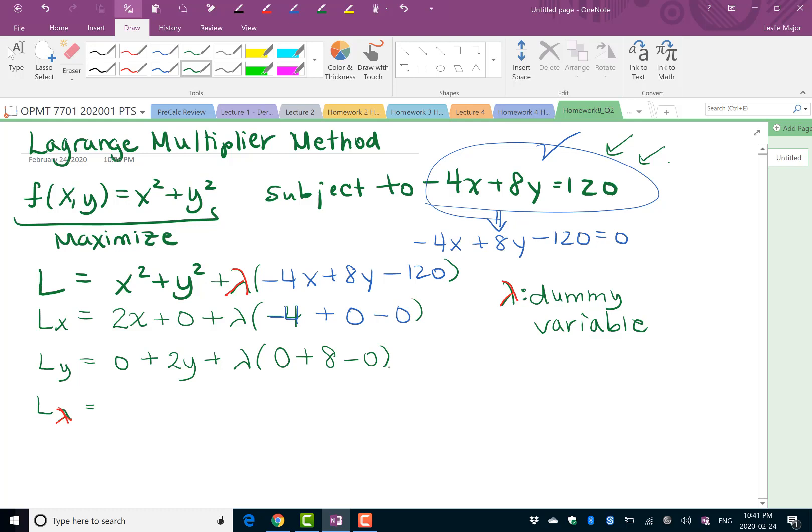And then finally L lambda. We have a lambda out front of this whole expression. Derivative of lambda with respect to lambda is just 1. Everything inside the bracket comes along for the ride, so it stays attached. The x squared and y squared have no lambdas, so both derivatives are nothing. We end up rewriting the constraint here essentially and multiplying it by 1.